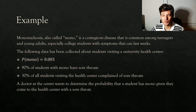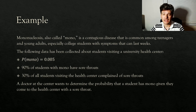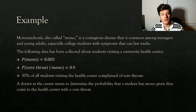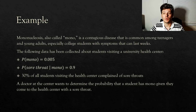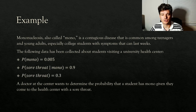Then we have 90% of students with mono having sore throats. So now we have a conditional probability — we know the student has mono, and what's the probability they have a sore throat? The probability that a student has a sore throat given they have mono is 0.9. That vertical line represents our given — what do we already know happened, how are we restricting our sample? Then the last part: 30% of all students that visit the health center complained of a sore throat, so the probability that a student has a sore throat is 0.3.